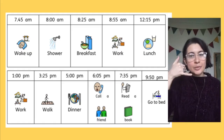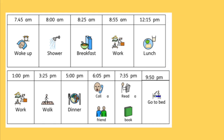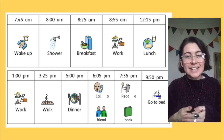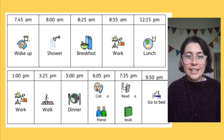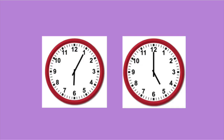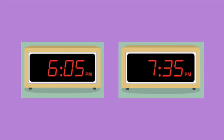What time do I call a friend? I call a friend at 6.05, or you can say 5 past 6. But what does 6.05 look like on the clock? Which one says 6.05? Remember, you can pause the video if you need more time to think. This one is correct. What about the same time on a digital clock? Which one says 6.05?